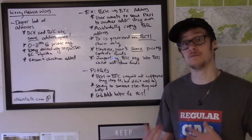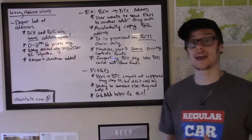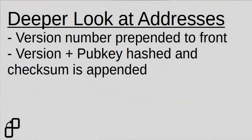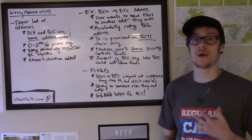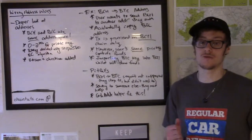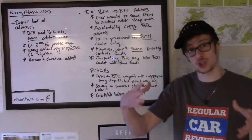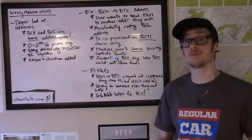We have this random 256-bit number as our private key, and then the public key is derived using elliptic curve cryptography algorithms — specifically SECP256K1 in the case of Bitcoin and Bitcoin Cash. A version number is prepended to the front of the public key, and then the version number and public key combination are hashed so that part of that hash can be added as a checksum to the end of the address. These addresses are then encoded in what's called Base58Check encoding, which shortens how large the address is visually.